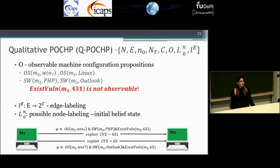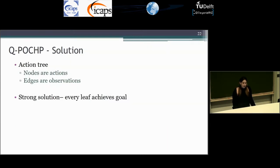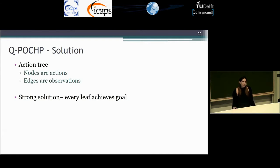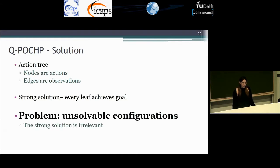A solution in our case may be an action tree, where the nodes are the actions and the edges are the observations we can see during the plan. A strong solution is where every leaf achieves the goal — every leaf reaches the goal machine, the target machine of the attacker. However, in our problem there are unsolvable configurations, and this definition is not directly relevant in our case.